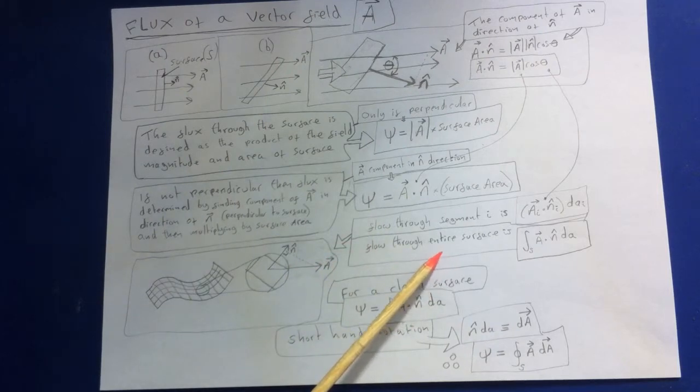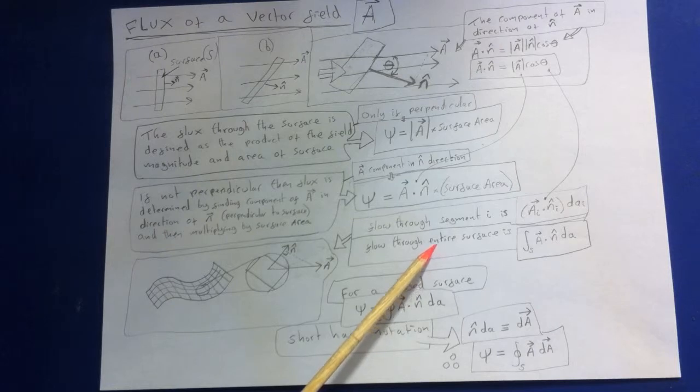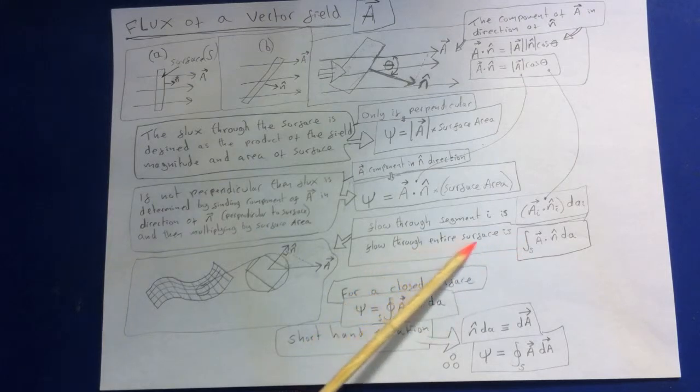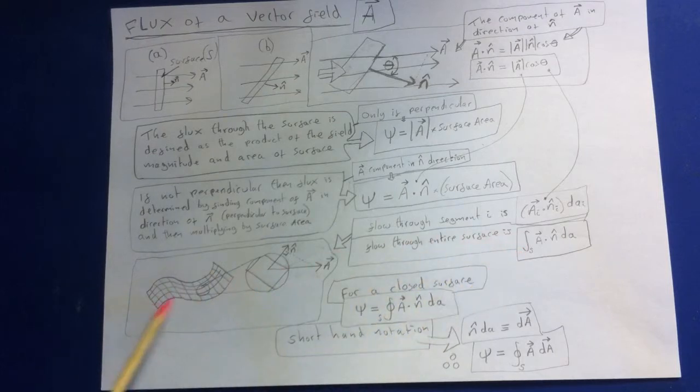Now we'll let the size of each segment shrink to zero, and then of course we get the integration. So we can rewrite this as the following. So that is the flow through the entire surface. It's the integral over the whole surface.